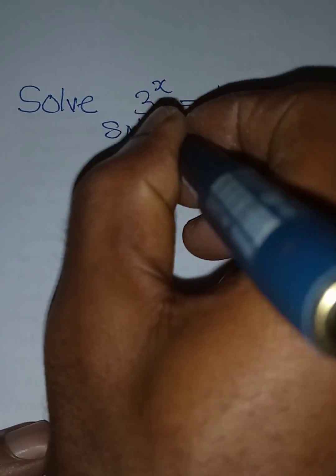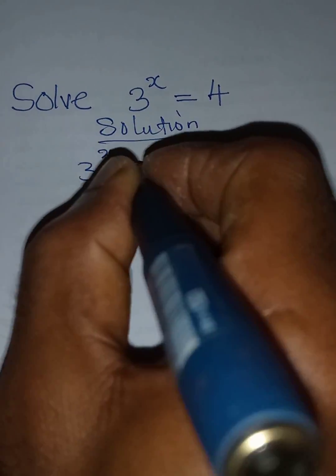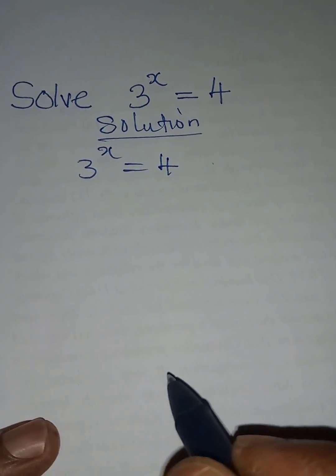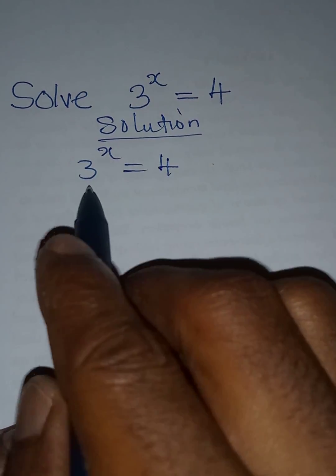Hello everyone, let's solve this problem very quickly. We have 3 to the power x equals 4. The way it is now, there's no way you're going to write 4 to have 3 as the base.